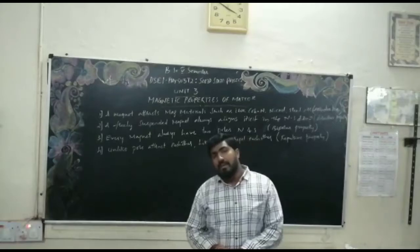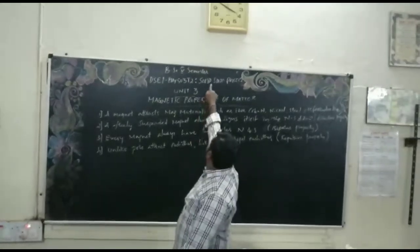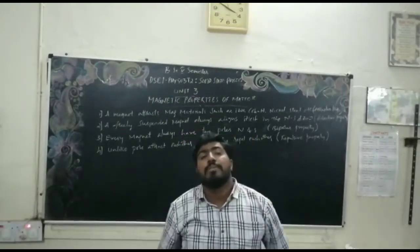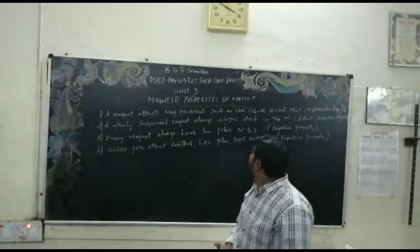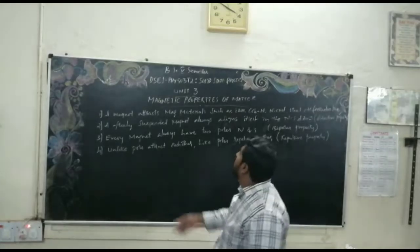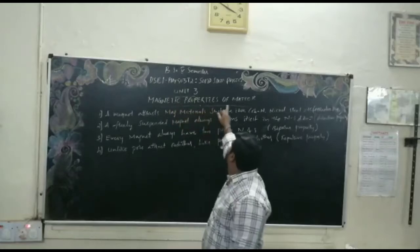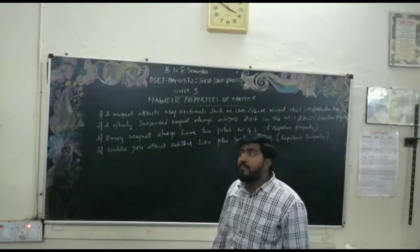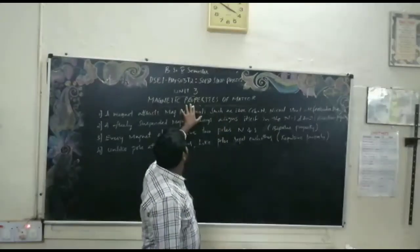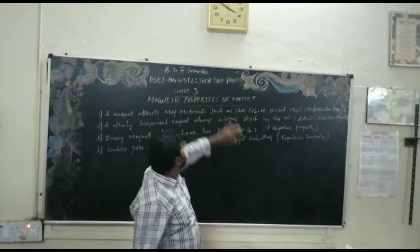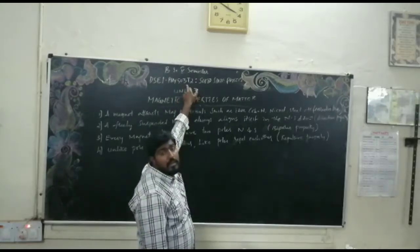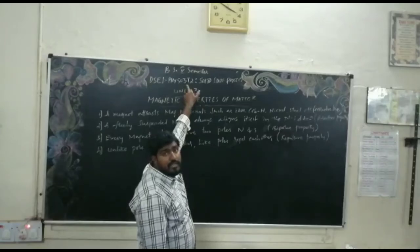Our topic is solid state physics. This is our BSE1 paper, Physics Minor 3, which is the code for solid state physics. I am going to cover Unit 3, which is the magnetic properties of matter.